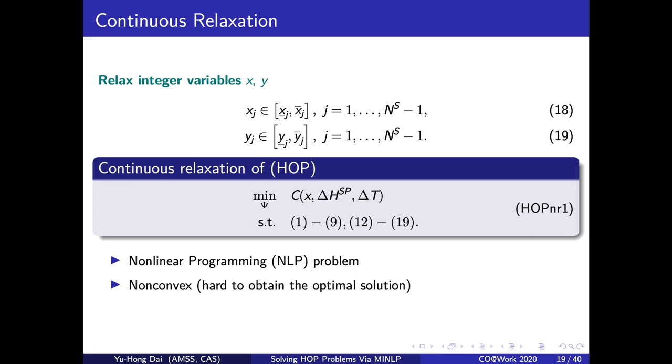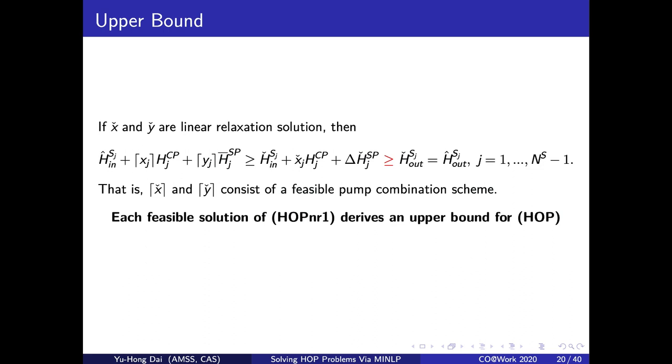The first thing that we easily come up with is to relax the integer variables to continuous variables. We relax all the integer variables x and y and we get the first relaxation of HOP. We denote it as HOPnr1. Note that it is a non-convex NLP, so we cannot achieve its global optimal solution easily. However, the good news is, we can easily get the feasible solution for HOP if we have a feasible solution of this relaxation. This is achieved by a simple rounding-up procedure because of the special structure of the problem, the inequalities of head calculation in the station which we mentioned before. So it means that each feasible solution of this relaxation derives an upper bound for the original HOP problem.